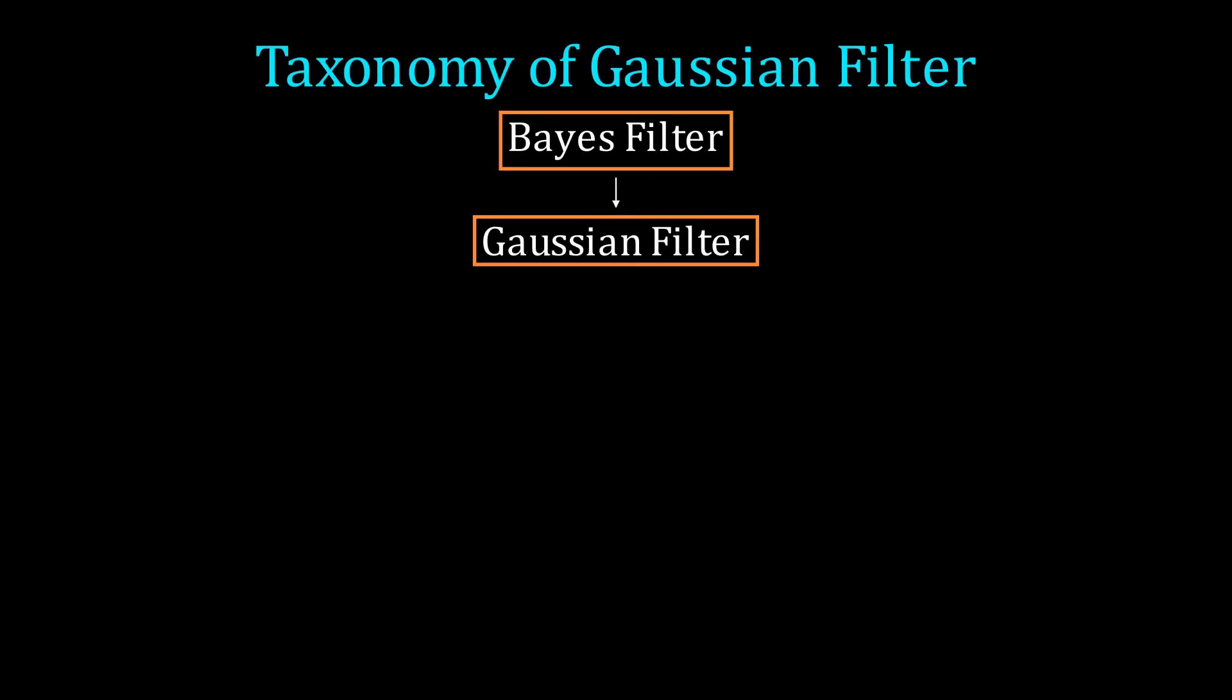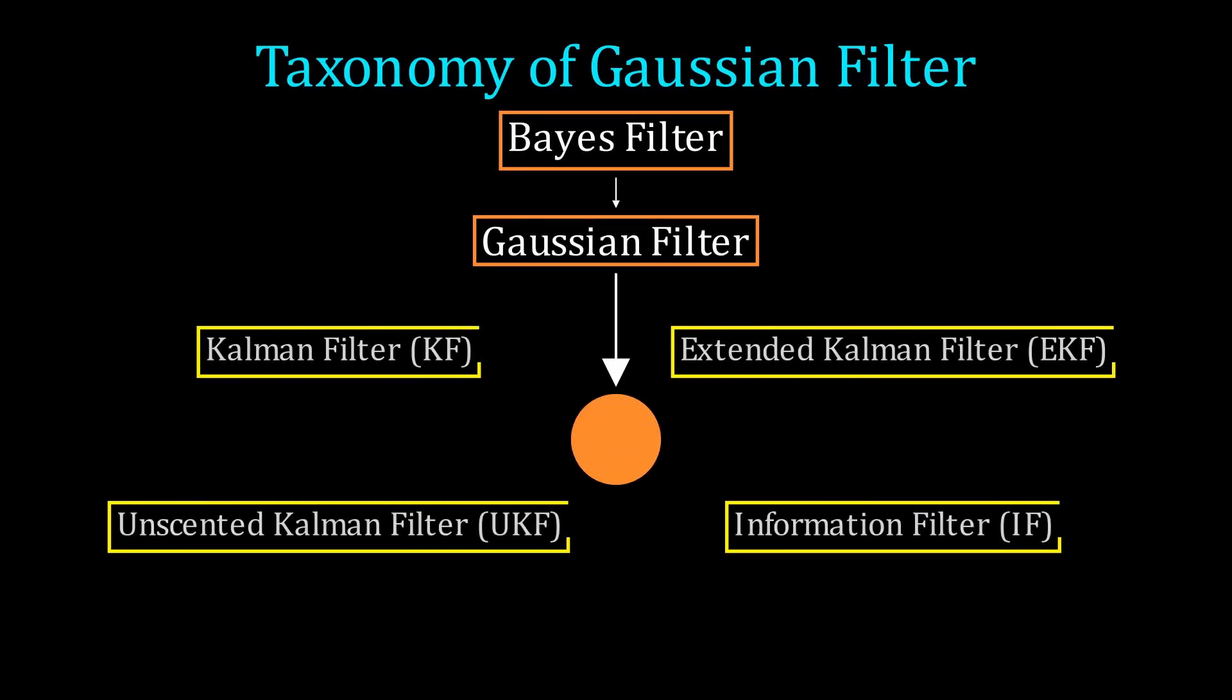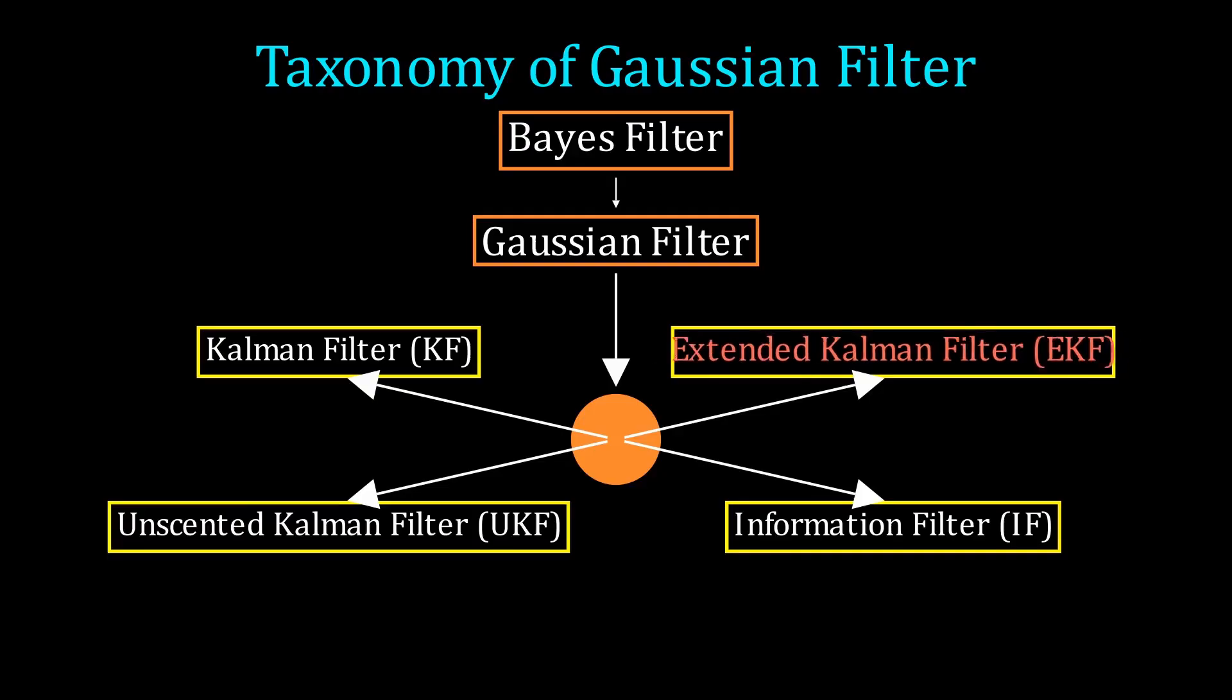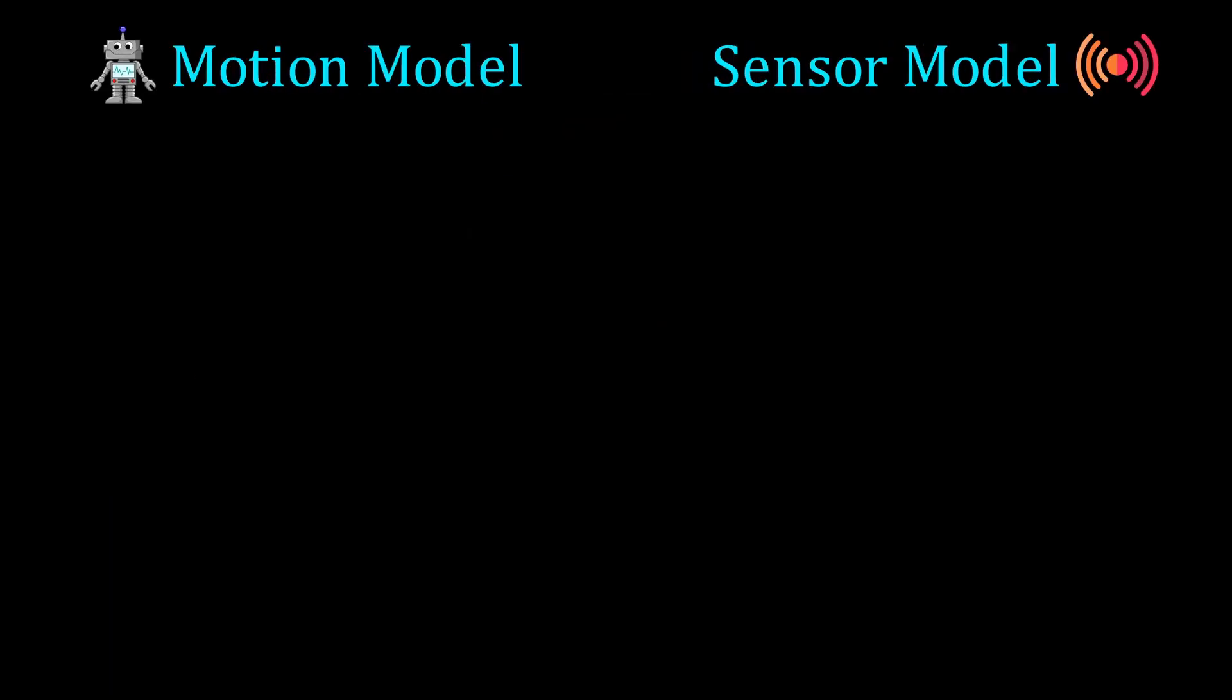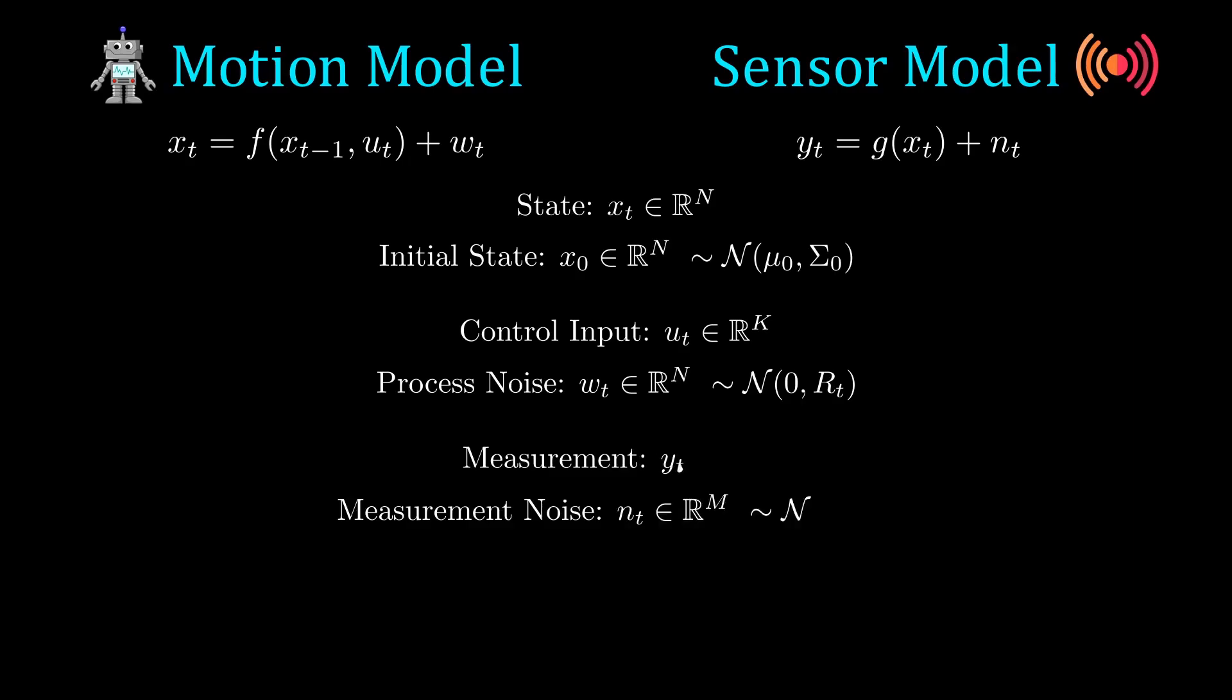Recalling the Bayes filter taxonomy, the EKF is considered a Gaussian filter and is the second out of four Gaussian filters we will discuss. In this model setup, we see that it is more general compared to the Kalman filter. Instead of having linear motion and sensor models, we are able to handle nonlinearities in our f and g functions. Other than that, the notation is all the same and we still require the normal distributions on the initial state and noise.